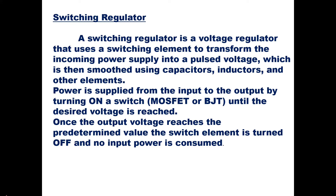The duty cycle is nothing but the on period divided by the on period plus the off period — that is, t_on divided by the time period T. If you vary the on time of the BJT or MOSFET, the output voltage can be varied. Depending on that you can have step-down and step-up configurations in switching regulators.